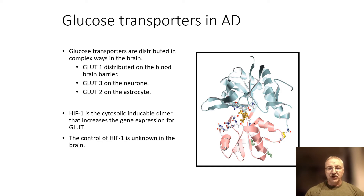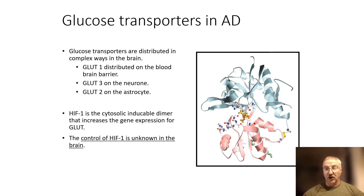The expression of glucose transporters around the body, including the brain, is increased by HIF-1 alpha, the cytosolic inducible factor. We have very little understanding of how we control HIF-1 alpha in the brain, compared to much better understanding in carcinomas.